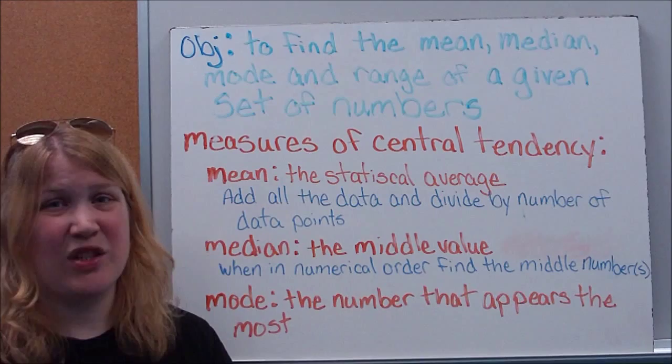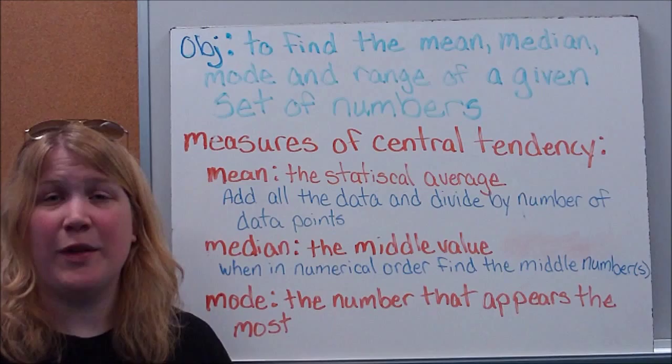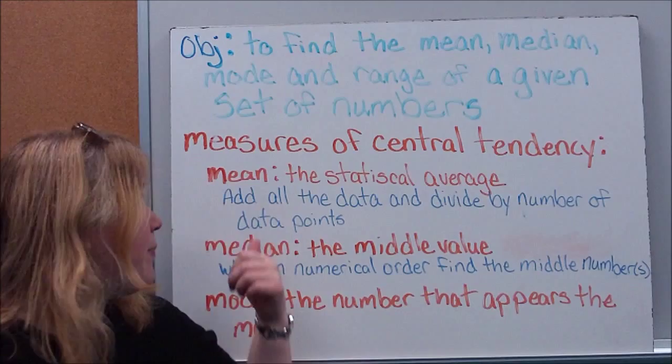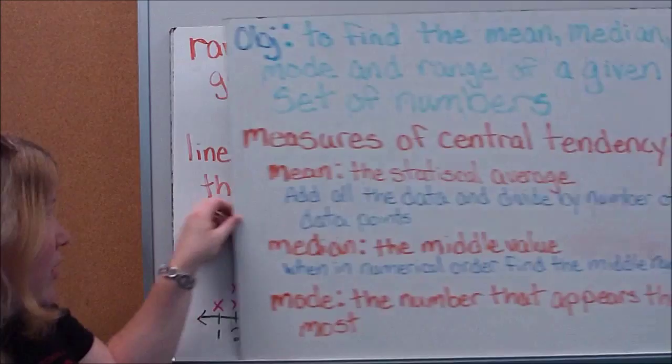And just so you know, in a mode, sometimes there's no mode because there's not a number that appears more than any other. Sometimes you can have more than one mode because there's multiple numbers that appear more than once. So don't let that confuse you. However, there's always going to be a mean. There's always going to be a median. Mode is one of the things where there may or there may not be one.